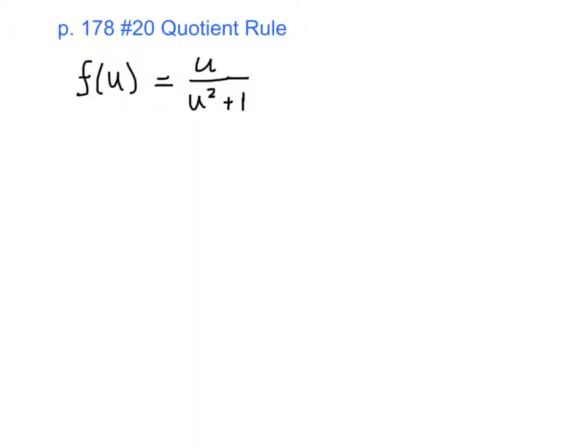I hope that doesn't complicate things. But in this case, the quotient rule would be vm prime minus mv prime over v squared.